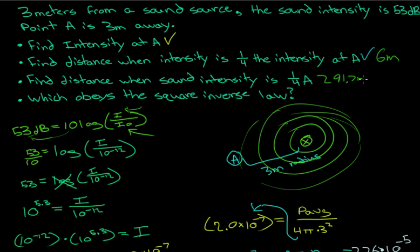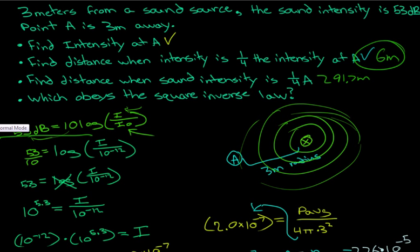As you can see, the distance for one quarter intensity was only 6 meters, but the distance for one quarter of the decibel level is 291.7 meters. This obeys the inverse square law, and it shows that perceived loudness does not necessarily correlate with intensity, because sound intensity is logarithmic whereas intensity represents the actual wave energy. In this question, we've solved the intensity at A, solved for one quarter intensity distance, and shown the relationship between sound intensity and actual intensity.